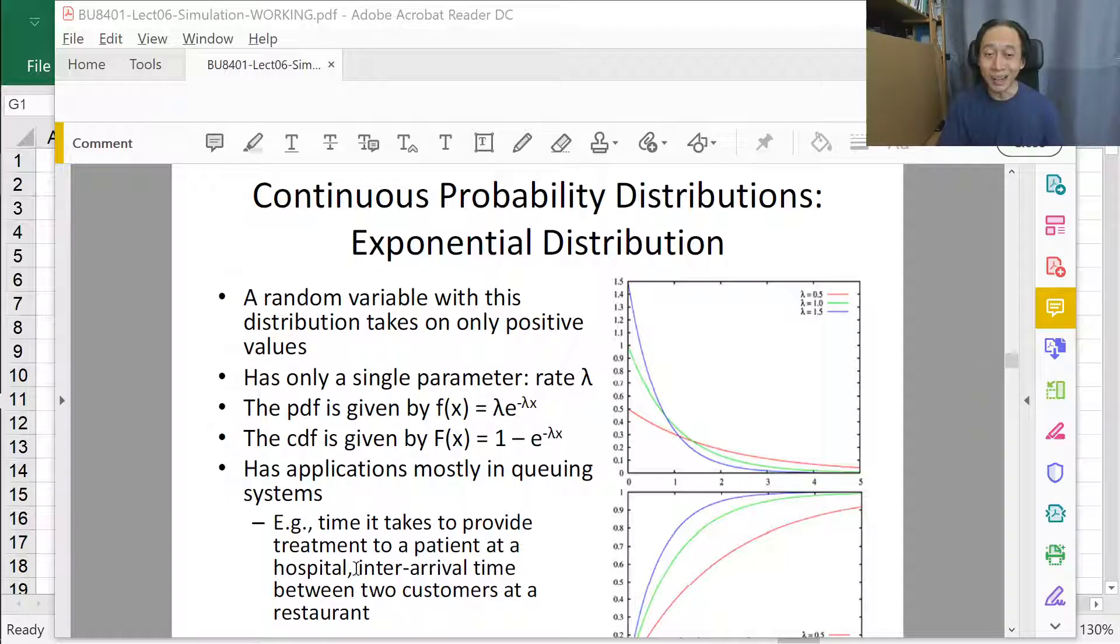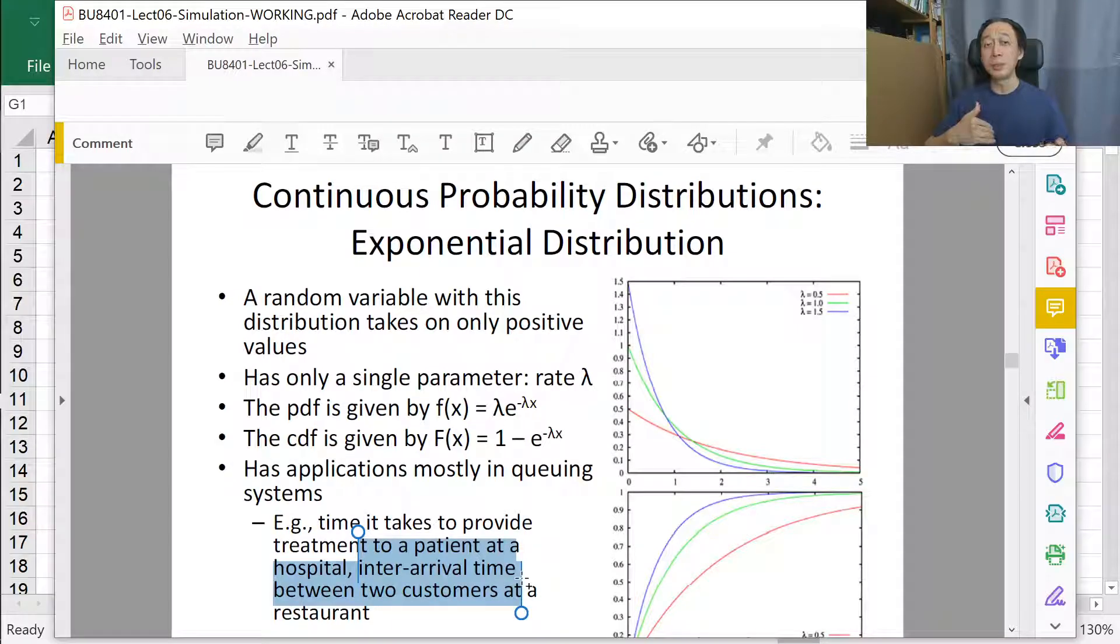When we do that measurement of time, that inter-arrival time between the pedestrians, and we plot it into a histogram, we'll see some sort of exponentially decaying curve. Maybe it's the blue, green or red depending on the busyness of the traffic. And it is in this sense that we use exponential distribution to model the inter-arrival times of pedestrians.